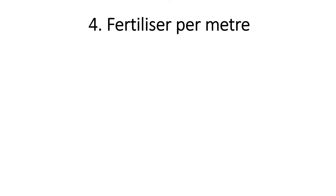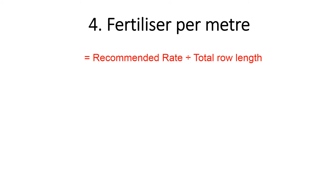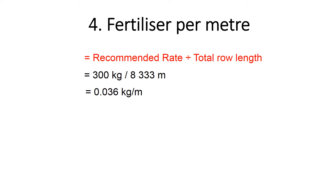Now we can work out how much fertilizer to apply per meter. We do this by dividing the recommended rate by the total row length. In our case, this works out to 0.036 kilograms per meter.